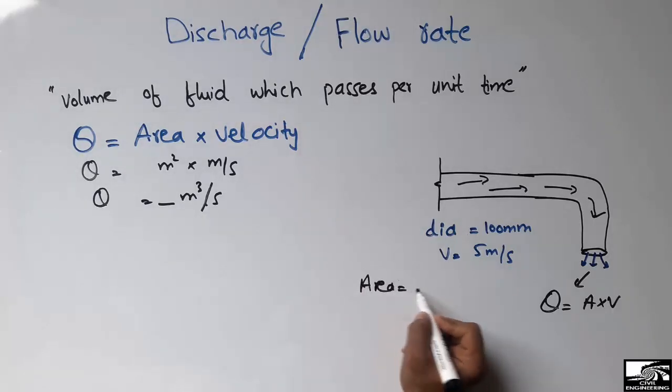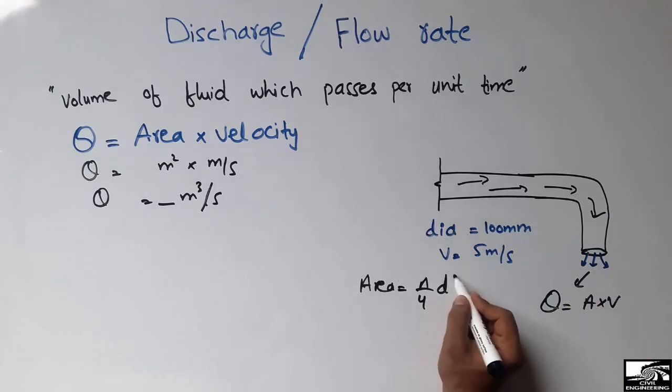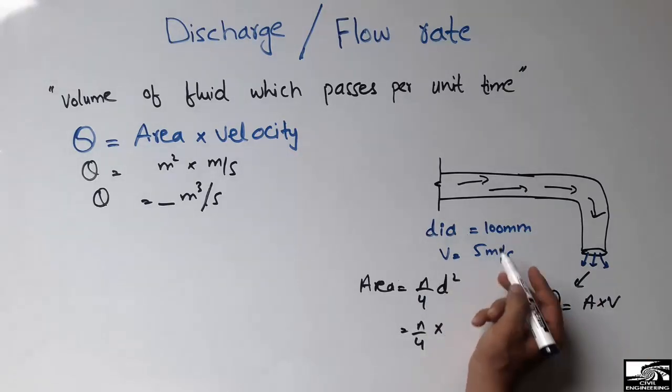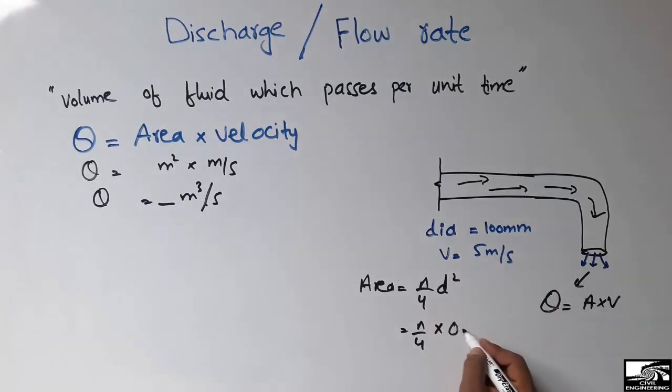This pipe is a circular pipe, so area equals π/4 × d². So π/4 into d is 100 millimeter. By converting into meter we get 0.1 meter squared. So we get the value of 0.0078 meter square.